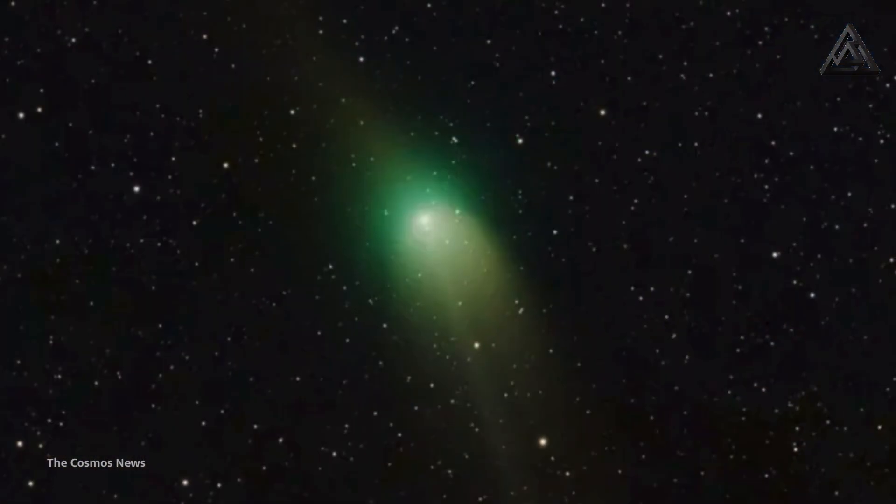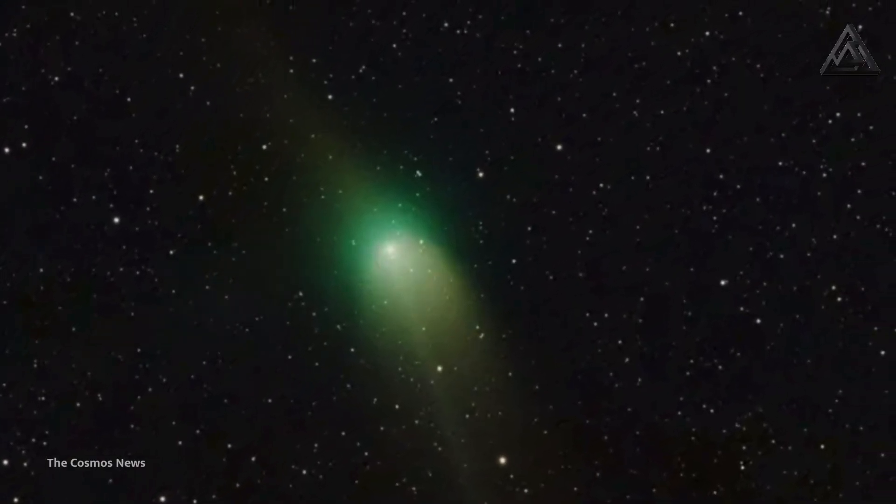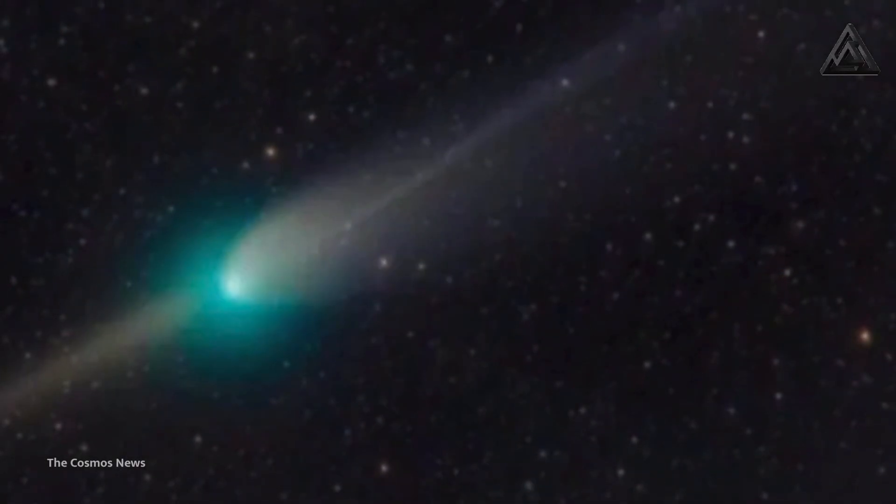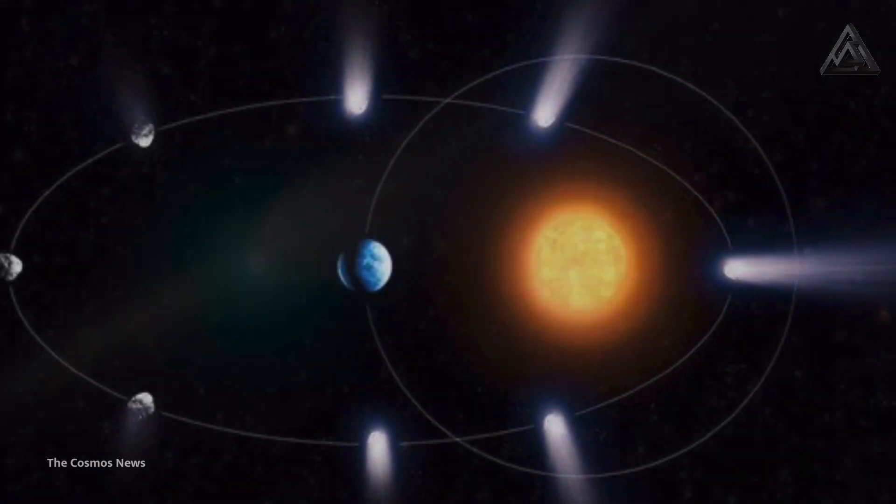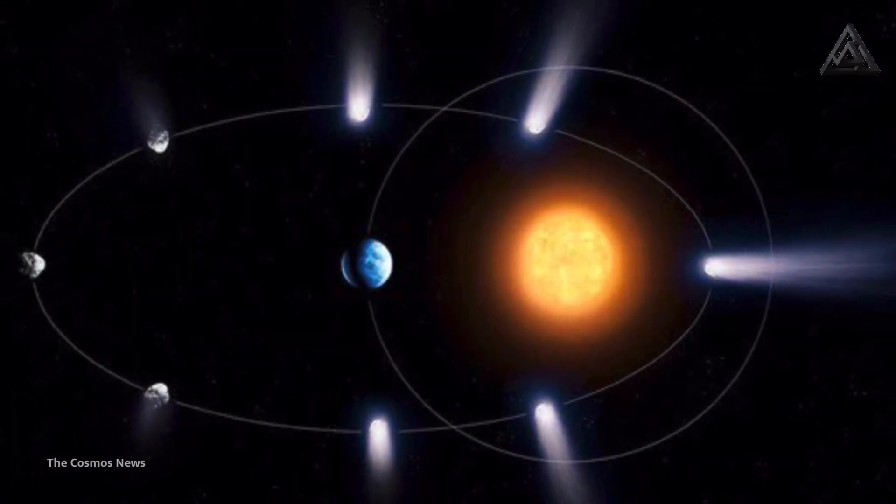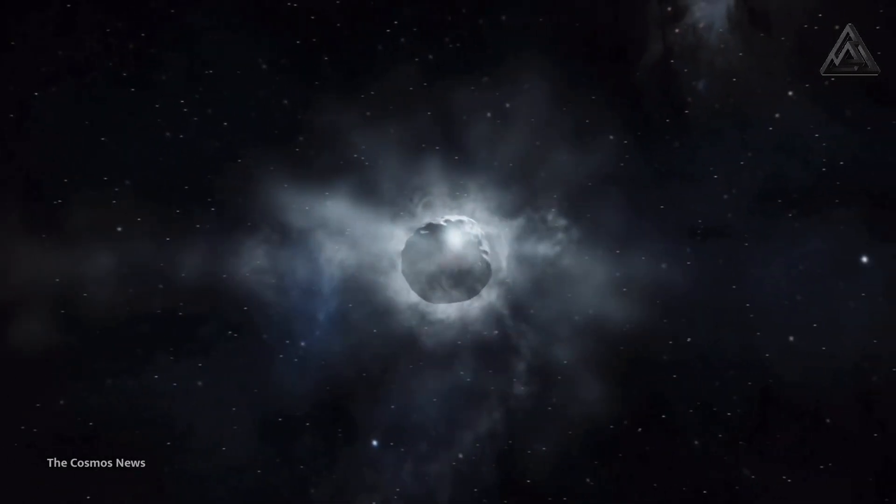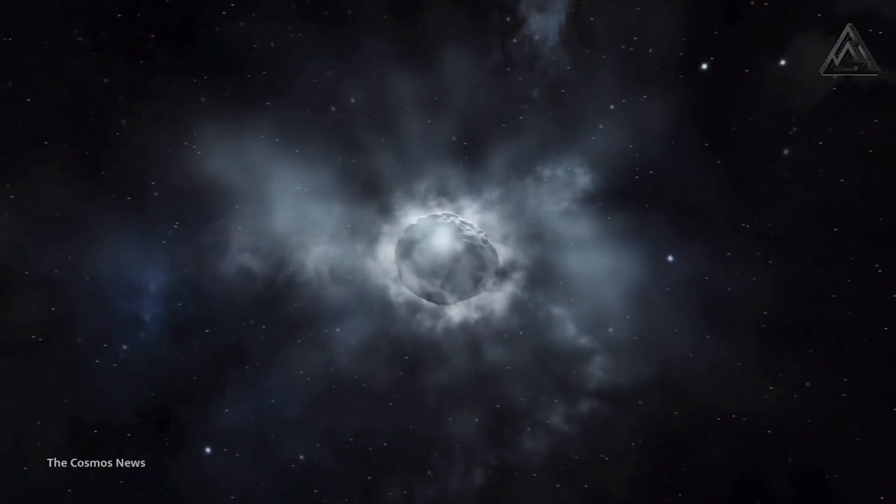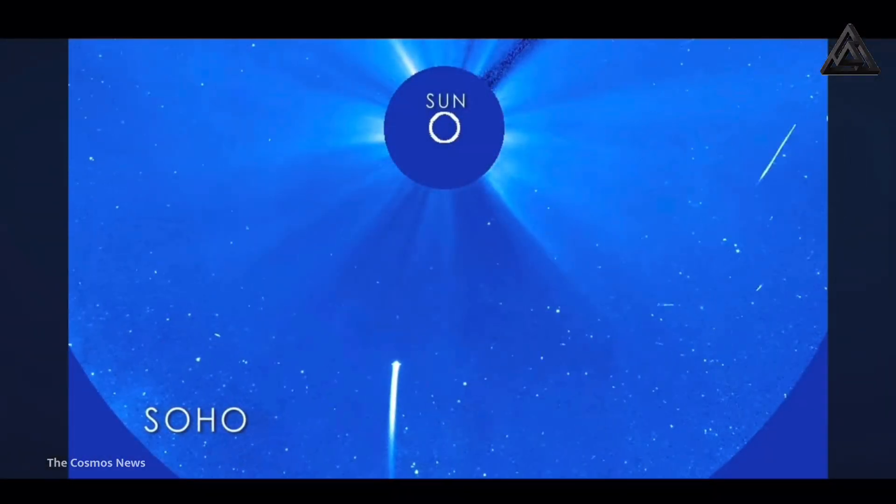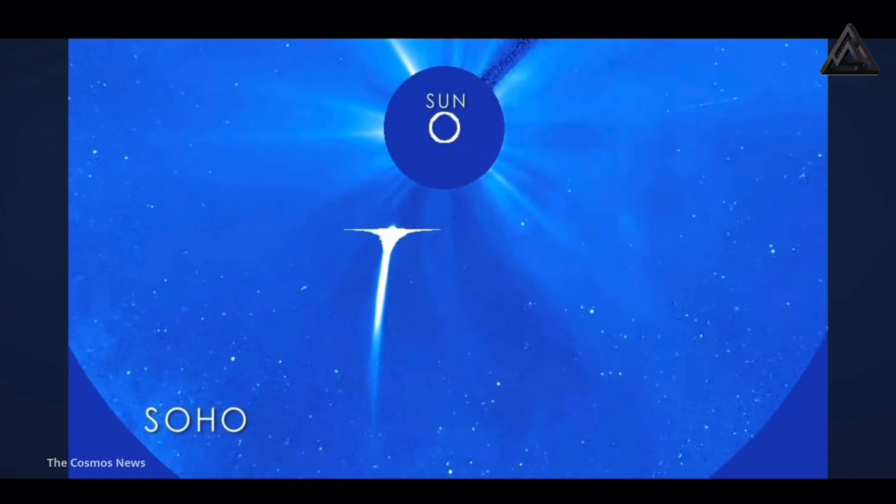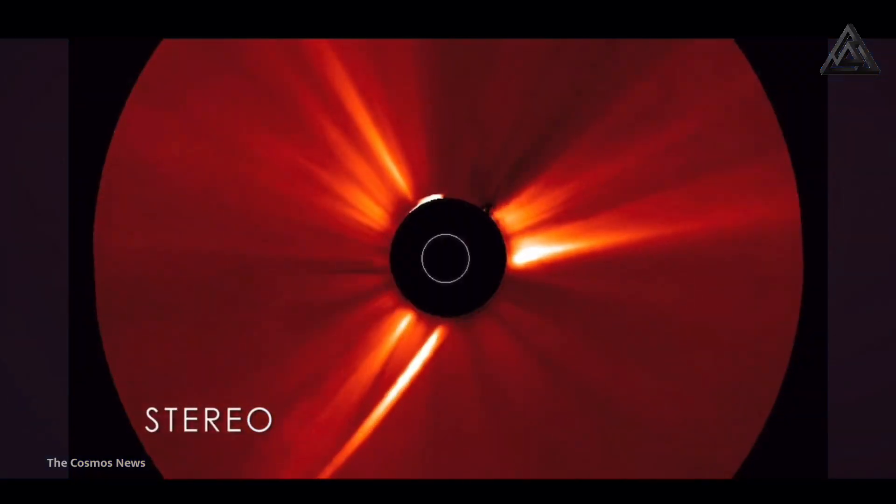One of the early surprises was its anti-tail, a plume seemingly pointing sunwards rather than behind it. Traditional comet theory says dust should be pushed away from the sun by radiation pressure, but here the pattern was reversed, at least initially. That triggered fresh interest in how this object might be different from familiar comets. Its behavior challenges textbook definitions of how solar radiation interacts with icy bodies, opening new avenues for theoretical and computational modeling.